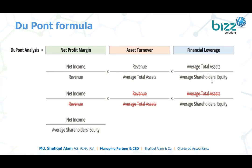Looking at the formula structure, we can see that revenue appears in both the numerator and denominator, so it cancels out. Similarly, average total assets cancel, and we are ultimately left with net income divided by average shareholders' equity — which is the ROE formula.